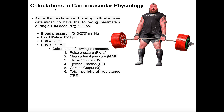In this video we're going to do some calculations in cardiovascular physiology. We've got an elite resistance training athlete who is determined to have the following parameters during a one RM deadlift at 500 pounds — meaning this is the maximum he can lift and we're measuring these parameters while he's doing the deadlift. His blood pressure was taken as 310 over 270, which might seem abnormal but it's actually common to have blood pressures that get into the 300s in very heavy resistance training, acutely.